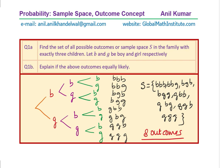All 8 outcomes form the sample space. Within this sample space we define events and find probability. Now part B: explain if the above outcomes are equally likely. As you can see, the probability of any one of them is 1 over 8, so yes, they are equally likely. The probability of having any one particular outcome is 1 out of 8.